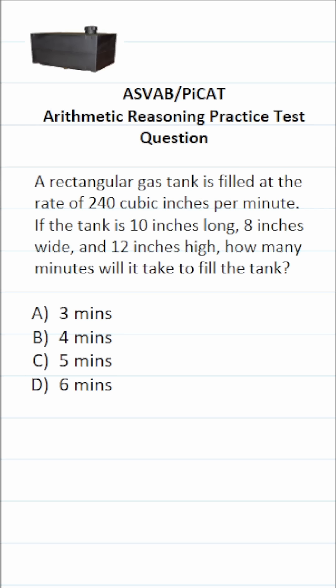So the first thing we have to do is find the volume of this rectangular gas tank. And of course, you can see that it is in the shape of a rectangular prism. How do you find the volume of a rectangular prism? It's length times width times height.